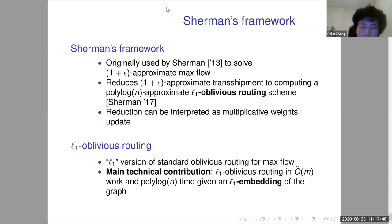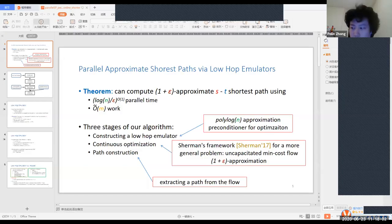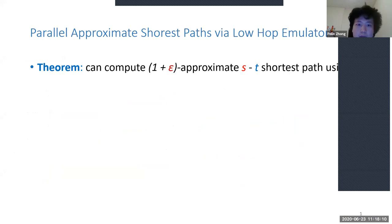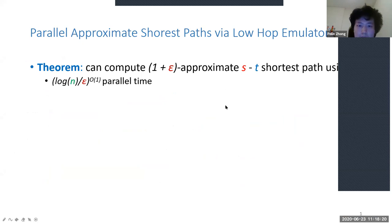Now I will present the alternative way to compute parallel approximate paths via local emulators. Our result is to compute a 1+ε approximation of SSSP using local emulators, taking polylog(n/ε) time and near-linear work. We have three stages: in the first stage we construct a local emulator — a new concept very similar to a hop set but with some fundamental differences. In the second stage, we use continuous optimization techniques to solve a more general problem — uncapacitated min-cost flow as mentioned by Jason.